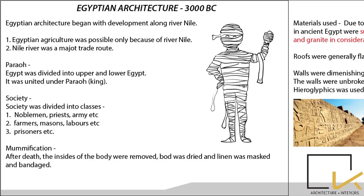Egyptian architecture began with development around the River Nile. The Nile was a basic source of water and agriculture — all major trade that happened during that time was along the banks of the River Nile. The Nile was of paramount importance to Egyptian people.